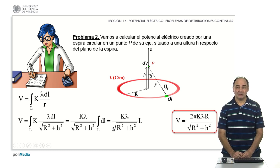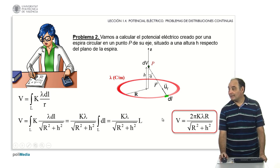As you can see, the integral has been, for an apparently complex case, quite simple. You can see that if the point were exactly this one here, the center of the loop, that is, lowercase h were zero, the denominator would become uppercase R.